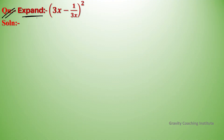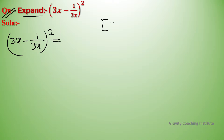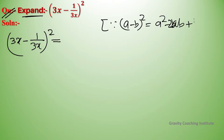Question: expand (3x - 1/3x) whole square. Solution: we use the identity (a - b) whole square equal to a squared minus 2ab plus b squared.